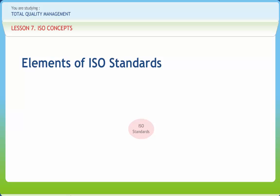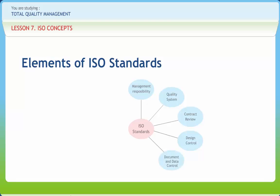Some of the requirements such as contract review only apply to one or two departments, while others such as document control are implemented across the company. The first requirement is for management to formulate a quality policy and provide the necessary organization and resources for the quality system. The quality system must be documented in a quality manual and operation procedures. Contracts and orders must be reviewed to verify that customer needs are adequately defined and well understood. Customer requirements for new or modified products must be translated into an appropriate design. Documents must be approved before they are issued and be identified with a revision level.